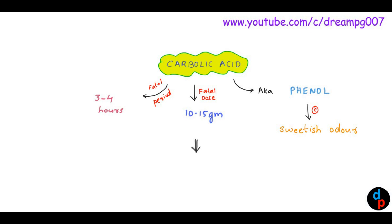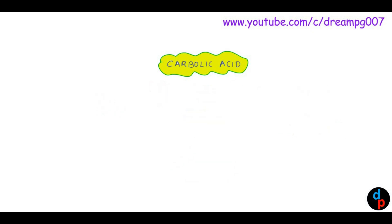Poisoning with Carbolic Acid is denoted by the term Carbolism. Carbolic Acid is metabolized by the liver in the human body to form toxic metabolites like Hydroquinone and Pyrocatechol.